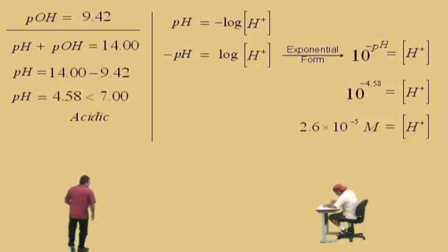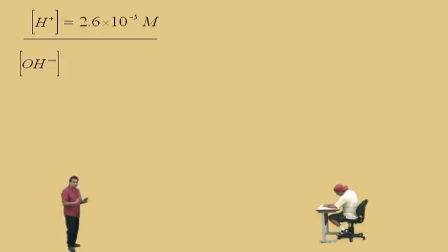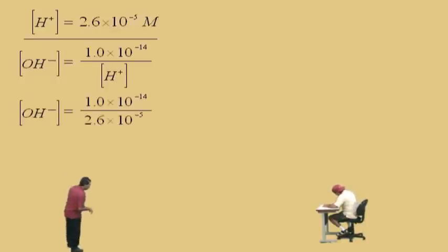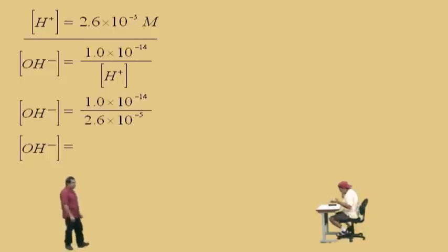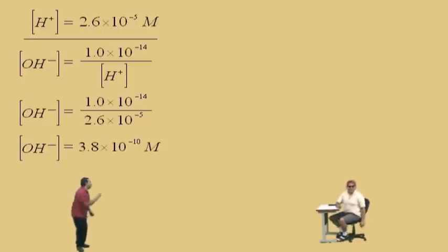Given that we have our hydrogen ion concentration, we can now calculate our hydroxide ion concentration using the ion product constant for water. The product of the hydrogen ion concentration times the hydroxide ion concentration always equals 1.0 times 10 to the negative 14th. So we divide: 1.0 times 10 to the negative 14th divided by 2.6 times 10 to the negative 5. What do you get, Charlie? 3.8 times 10 to the negative 10 — 3.8 times 10 to the negative 10 molarity. Don't forget — moles per liter.